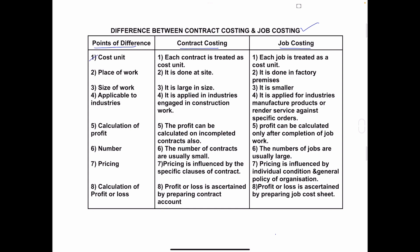Number one: Cost Unit. In contract costing, each contract is treated as a cost unit, and in job costing, each job is treated as a cost unit. In contract costing, they take contracts for construction of buildings, dams, bridges, etc., so the contract is considered the cost unit. In job costing, they take an order or job from the customer, so each job is treated as the cost unit.